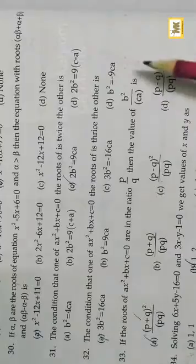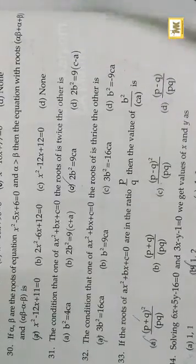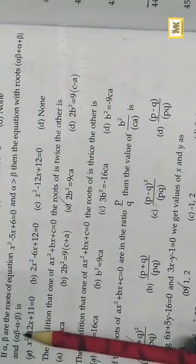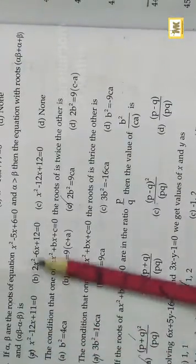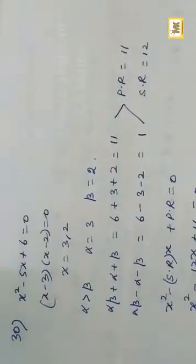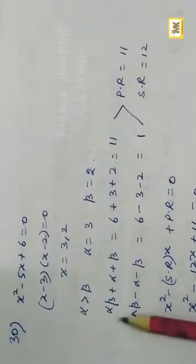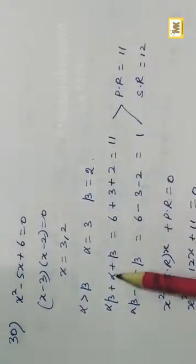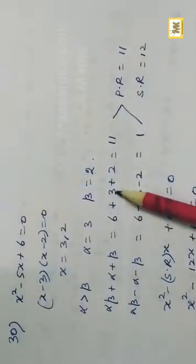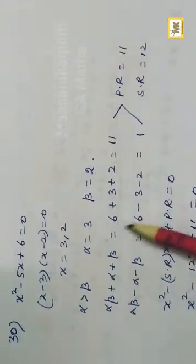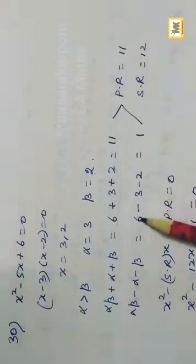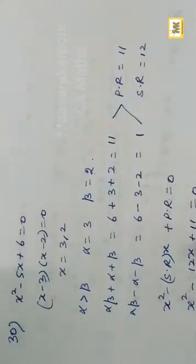Question 30: Find the equation whose roots are αβ+α+β and αβ-α-β. Alpha and beta are the same: alpha = 3, beta = 2. So αβ = 6, α+β = 5. First root = 6+5 = 11. Second root = 6-5 = 1.